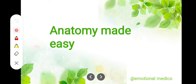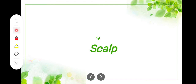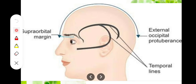Assalamualaikum. In this video we are going to talk about the scalp, which is the skin or any tissue present over the skull — the cranium. If we look at its extent, it extends from the supra-orbital margin anteriorly to the external occipital protuberance posteriorly, and on each side to the superior temporal lines. This whole region is included in the scalp.